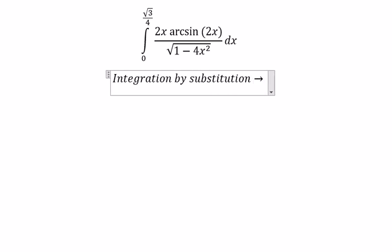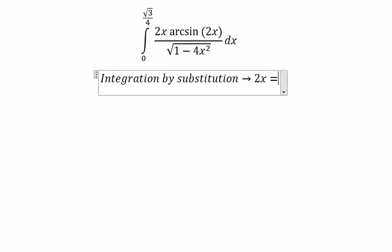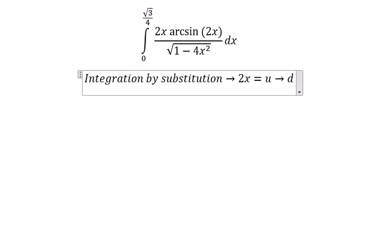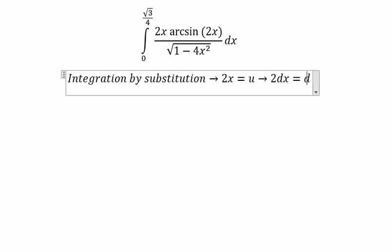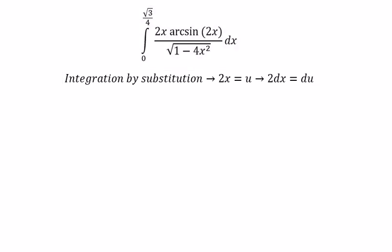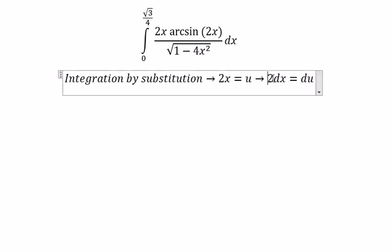So we put 2s equal to u. The ds we put as du equals to number 2. Because 2s in here, we will change to u. So we don't have the number 2 in here, so we divide both sides by number 2.